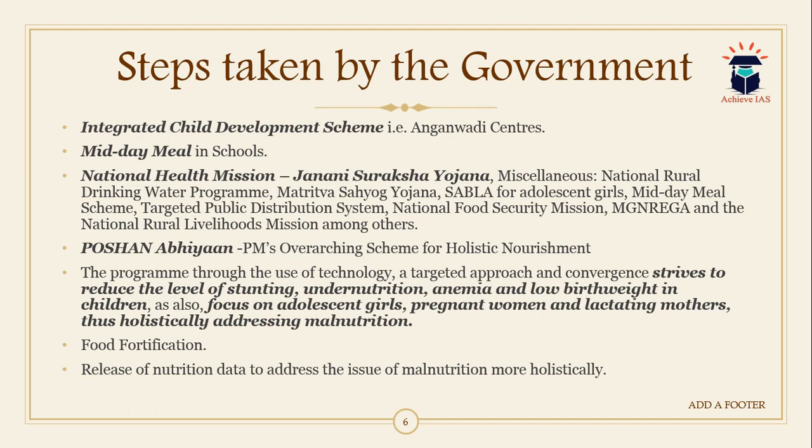Recently, the government launched the National Nutrition Mission and POSHAN — which stands for PM's Overarching Scheme for Holistic Nourishment. This program focuses on the use of technology, a targeted approach, and convergence. It holistically targets stunting, under-nutrition, anemia, and low birth weight in children, and focuses on adolescent girls, pregnant women, and lactating mothers. The government is also pursuing food fortification, enriching foods with micronutrients they lack, and releasing nutritional data to address malnutrition more comprehensively.